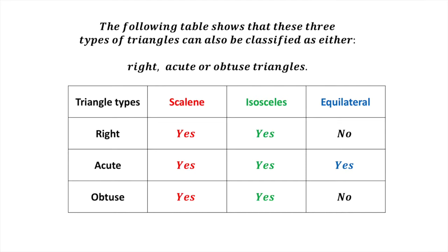In the first column, a scalene triangle can also either be a right, an acute, or an obtuse triangle. Here are some examples of scalene triangles that are also either right, acute, or obtuse triangles.